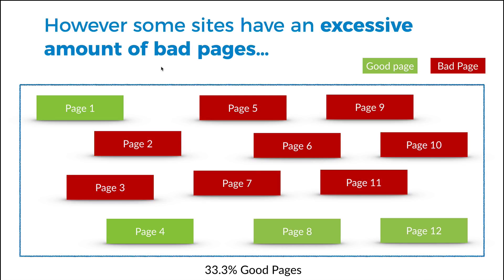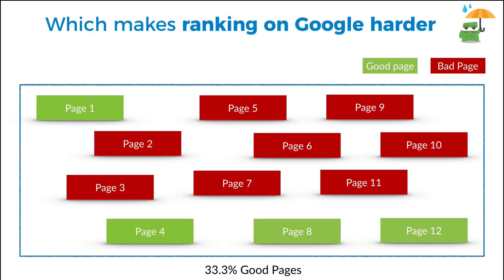However, some websites have an excessive amount of bad pages — tons of thin content, tons of duplicate content, broken links — basically things that are bringing down your website. When Google looks at your site and sees that the majority of pages are bad and you only have a handful of good pages, that's when the problems begin. Most people who have this going on have no idea, and that's what might be hidden to you but Google picks up on, holding you back from ranking.